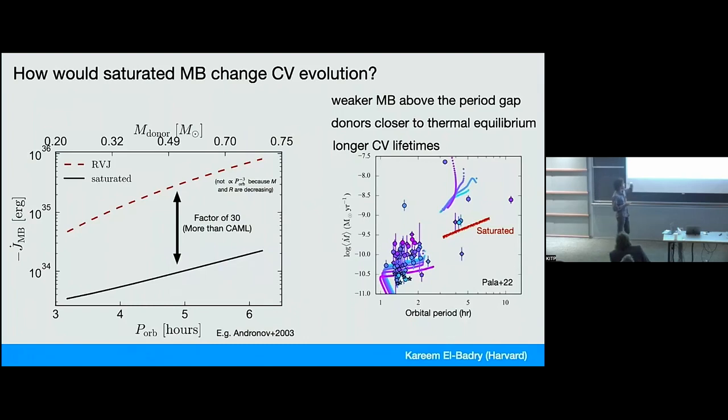So if you assume this, many things about CV evolution change. One is the typical lifetimes during mass transfer are longer, by something like a factor of 30. That means the donors come closer to being in thermal equilibrium rather than out of thermal equilibrium. And yeah, the mass transfer rates go down.